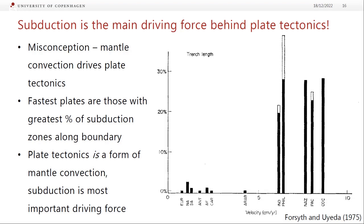Plates with large amounts of subduction zone — like the Pacific, Cocos, and Nazca plates — move really fast, regardless of their size. Plates mainly surrounded by ridges — Eurasia, North America, South America — move very slowly. The distinction is that plate tectonics is a form of mantle convection, with cold plates going down and return flow in response, but subduction is actually the biggest driving force — much more important than ridge push or any other force.